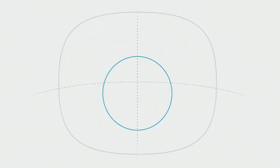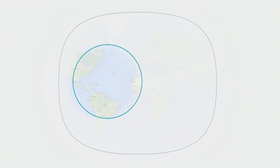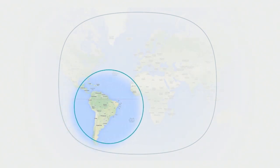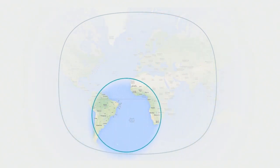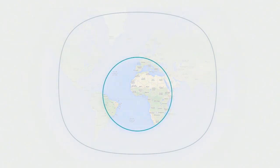Vertically, you tend to look down about 15 degrees from the horizon, though it depends on posture — reclining in a seat means you can't look down as far. With those constraints, you've got a field of view and a range of motion, and that's one way to think about what your canvas is. Things can be placed all over the range of motion, but the user will only see what's in the field of view at a time.